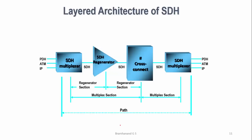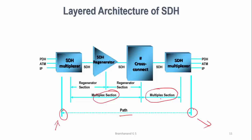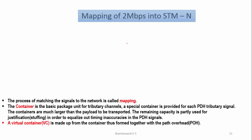This is the layered architecture of SDH. A trail between an origination point and the destination is called a path. A span between SDH multiplexer to digital cross connect is called a multiplex section. A multiplexer to regenerator span is called a regenerator section, and regenerator to regenerator is also called a regenerator section.